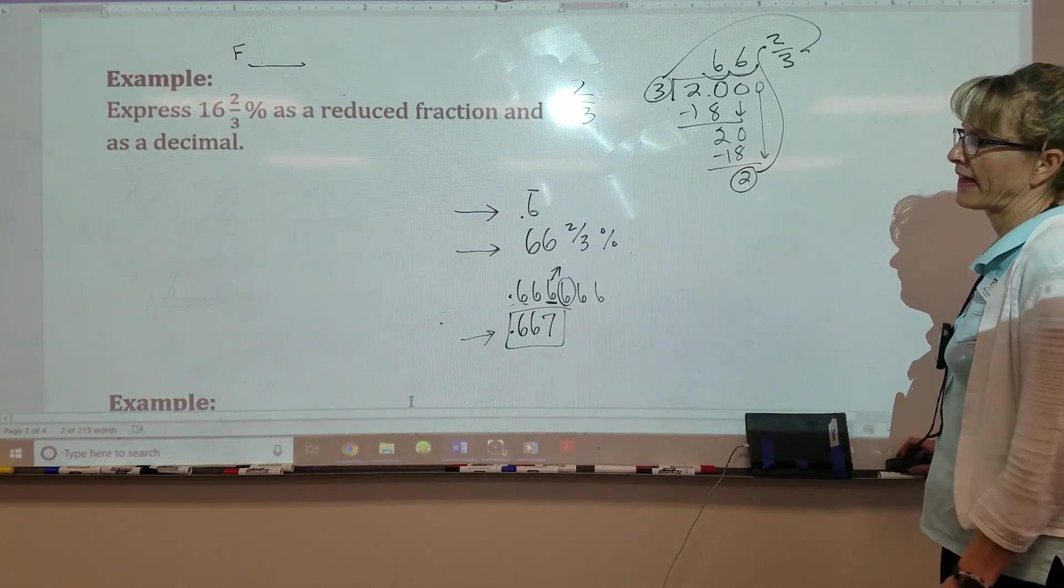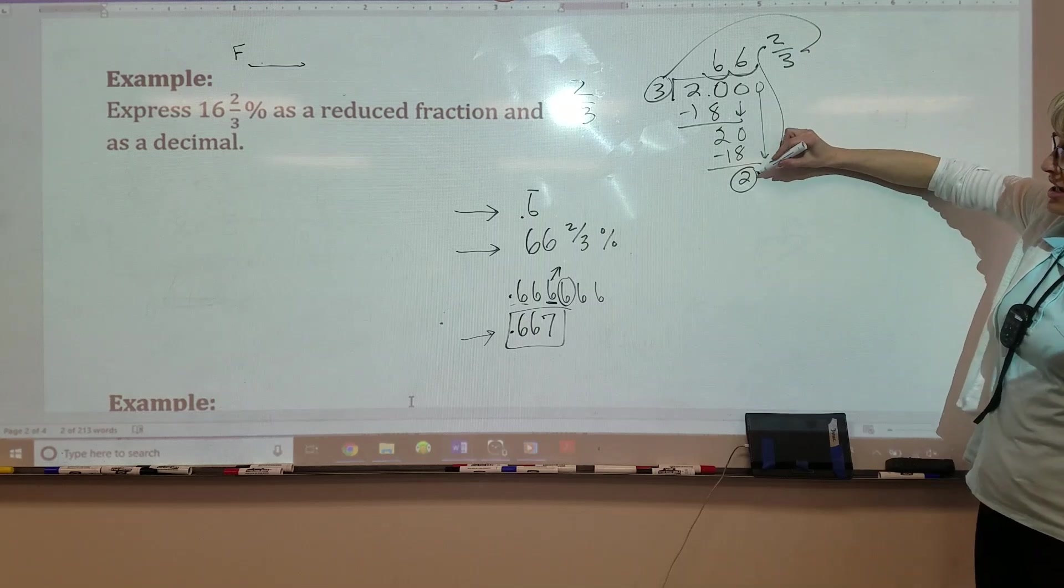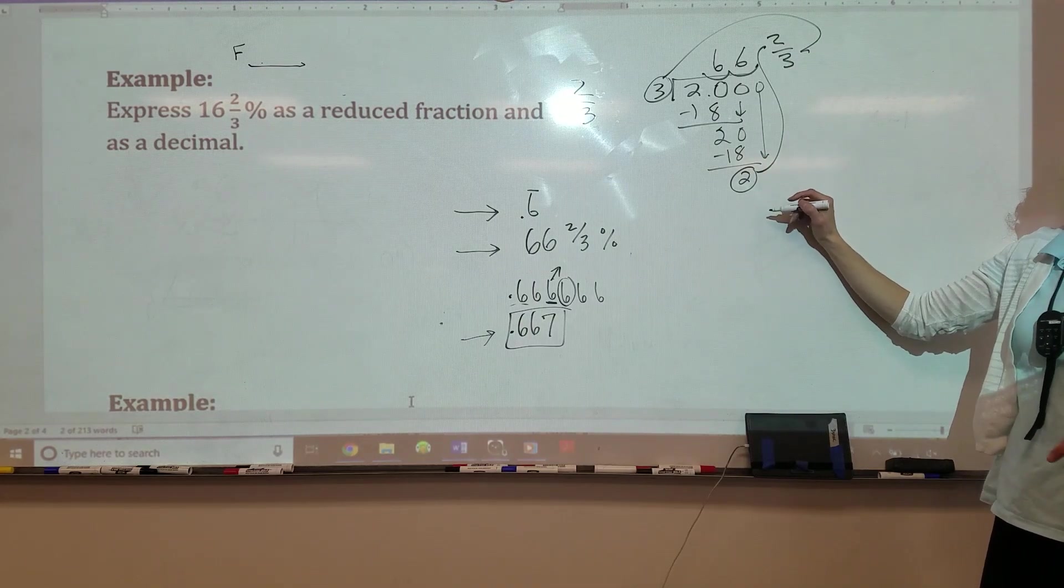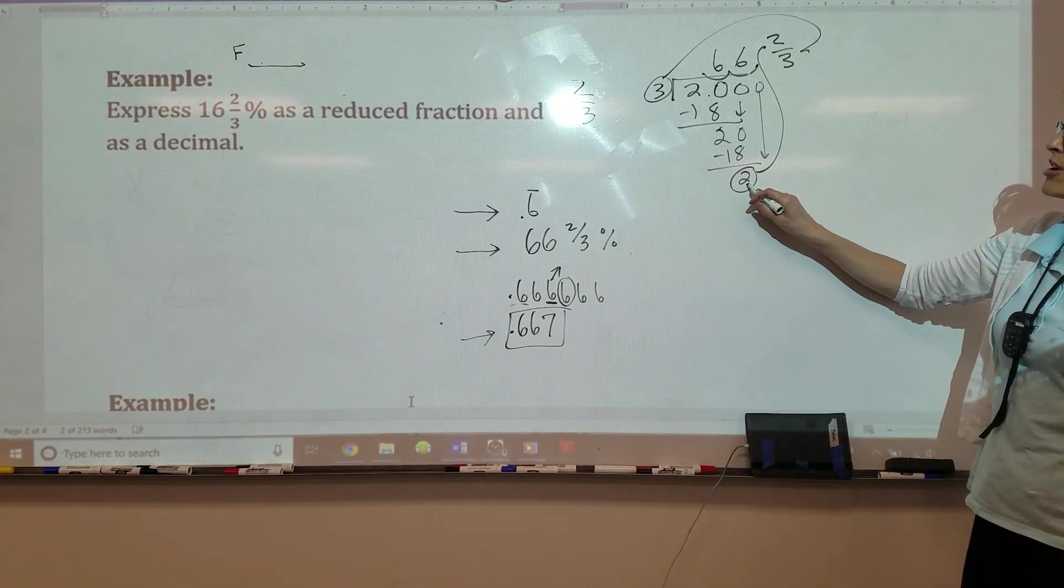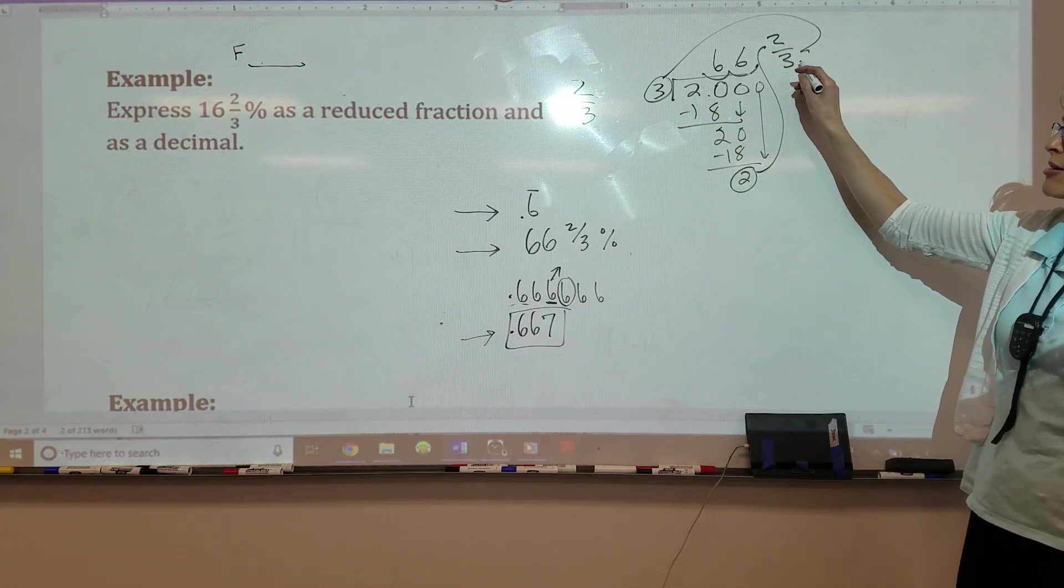So, question. How did you get the two-thirds first? Great question. Where did the two-thirds come from? So I took my remainder, you know how it would keep going 20, 18, 20, 18, 20, 18? I knew since it was going to repeat, I could just stop at two. I took that remainder, two, and made that become the numerator. Okay? Three became the denominator.